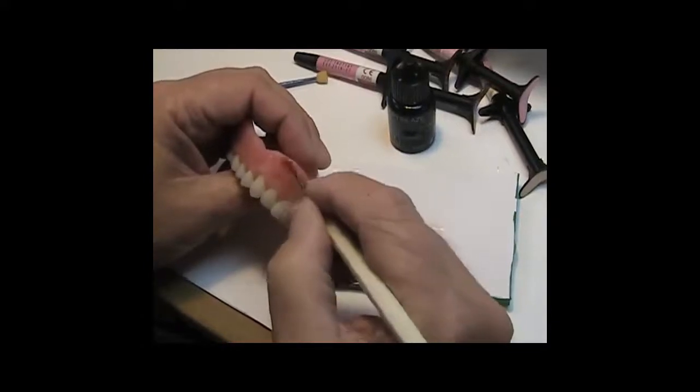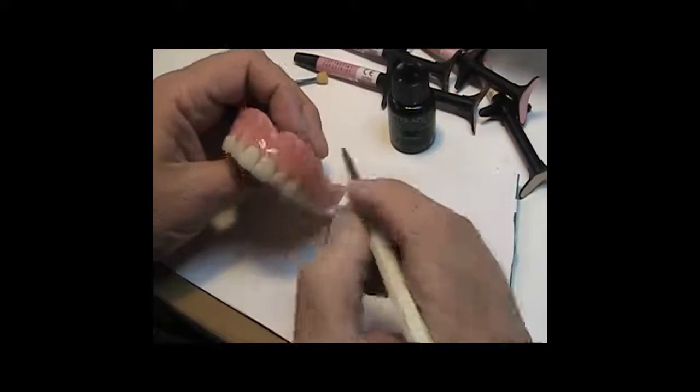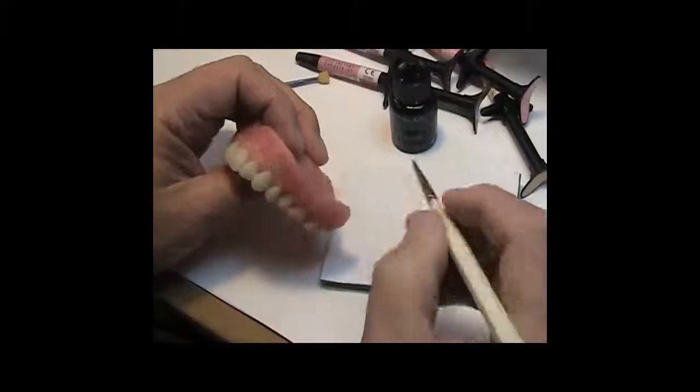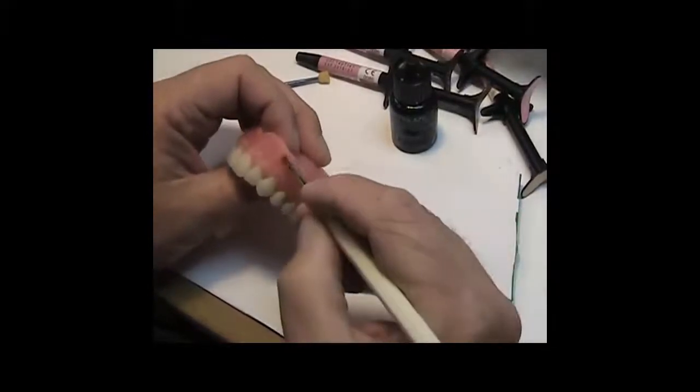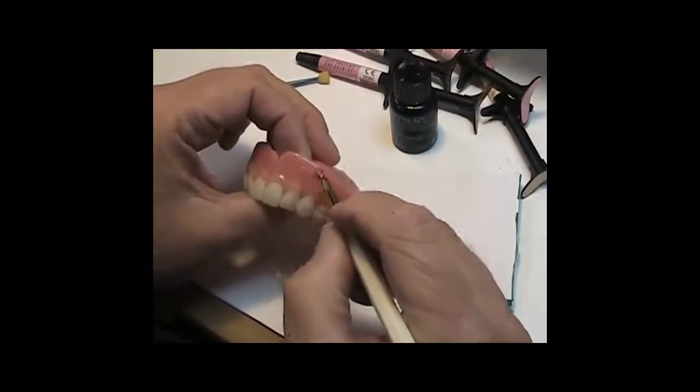What I want is a surface which is semi-glossy and non-attractant to biofilm. And so, what I do is I first put a light coat of the OptiGlaze Clear on the surface because I want to start a texturing process, as I mentioned.